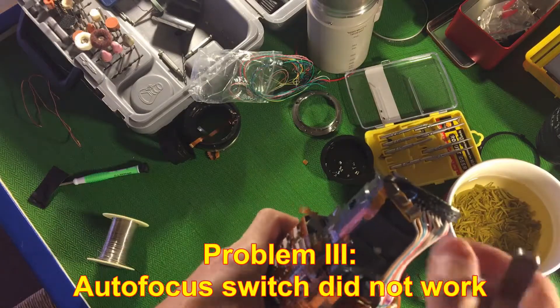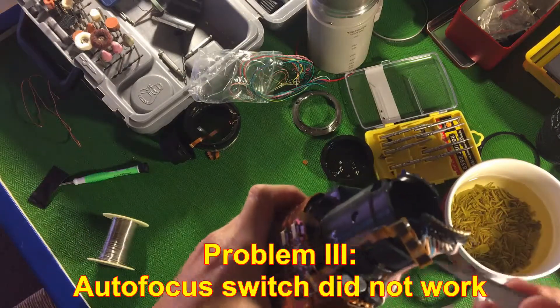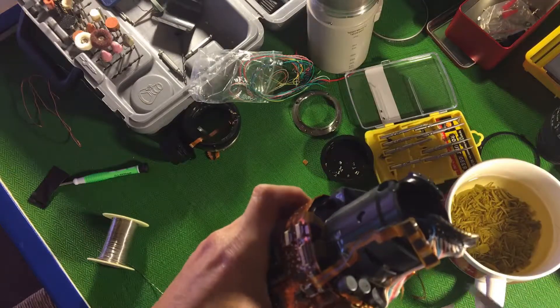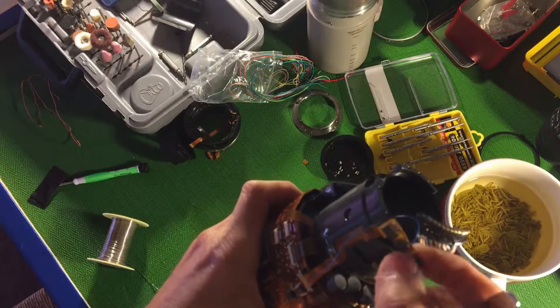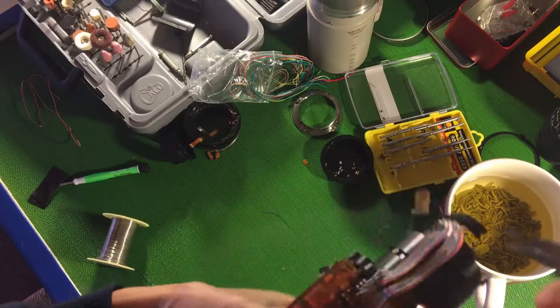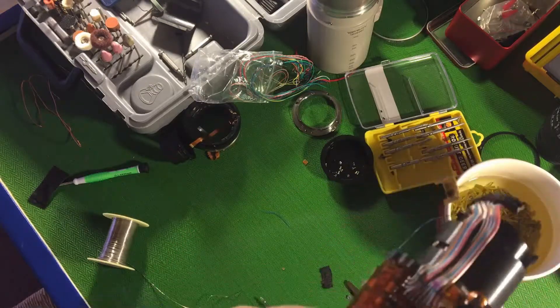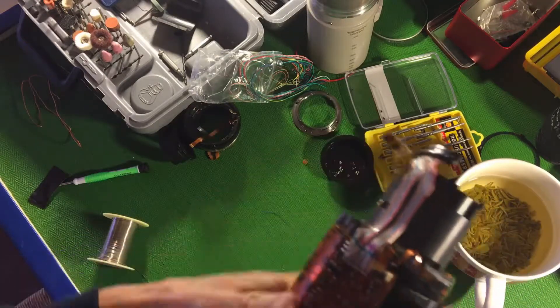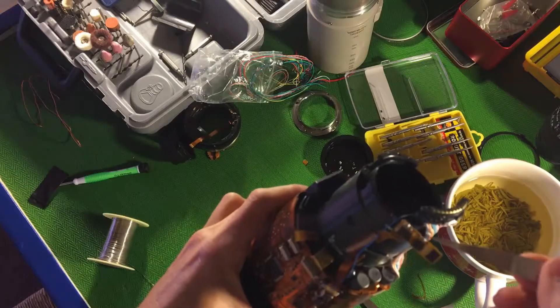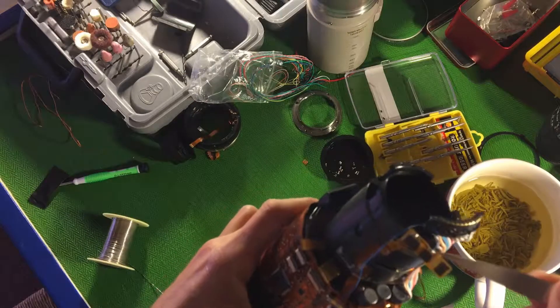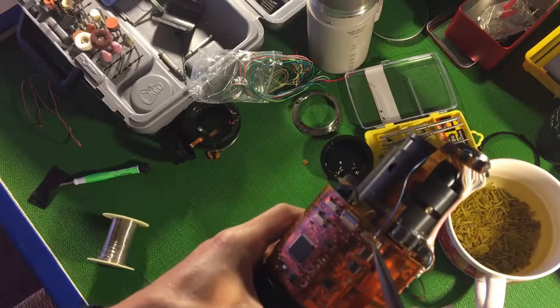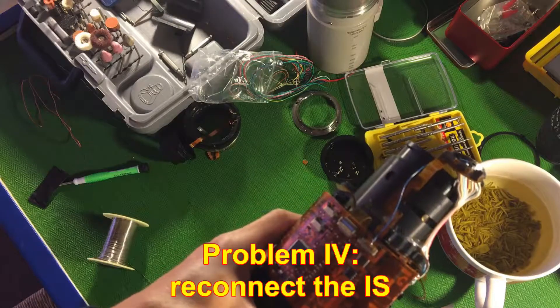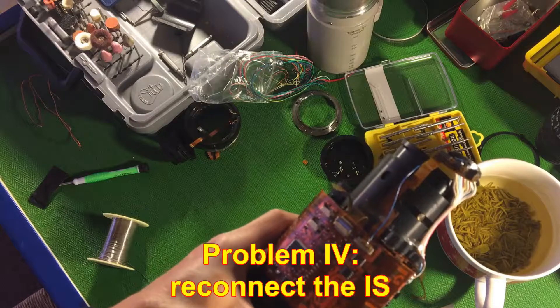I also found out that the previous owner tried to open it and not only broke this switch, but there's also a small cut in the wires at the back. So I decided to use this blue wire soldered from this pin all the way down to here to fix that image stabilizer wire.